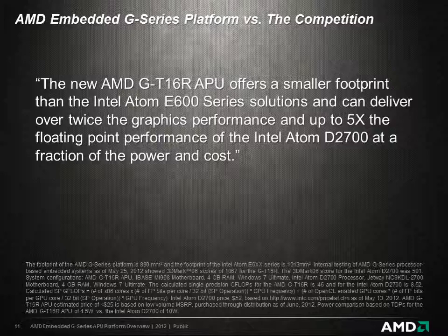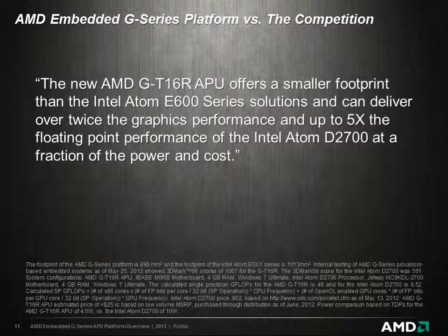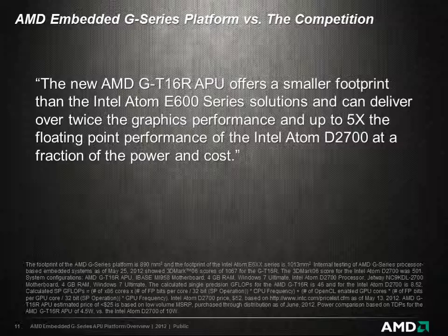So where does the AMD Embedded G-Series APU match up against our competitors' respective offerings? The new AMD G-T16R APU offers a smaller footprint than the Intel Atom E600 Series solutions, and can deliver over twice the graphics performance and up to five times the floating-point performance of the Intel Atom D2700, at a fraction of the power and cost.